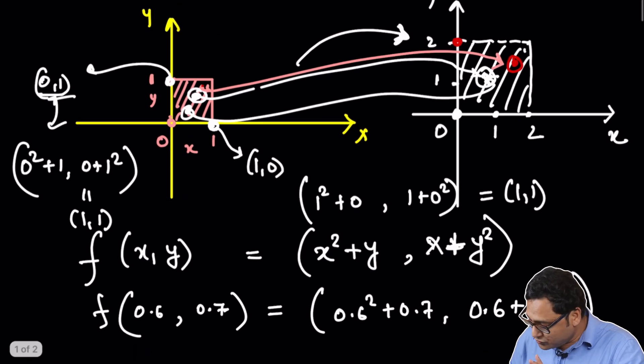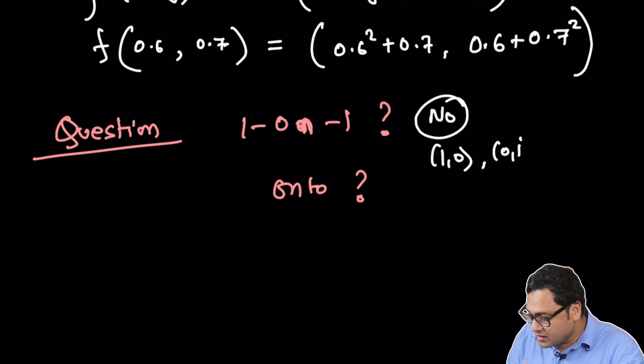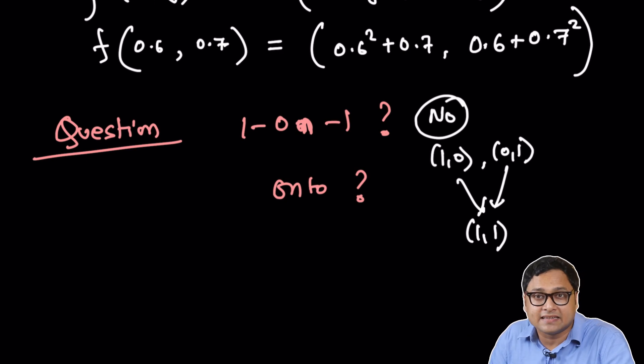Now why is the function not onto? Well, because 1 comma 0 and 0 comma 1 map to 1 comma 1. So we found a counter example. Similarly, why is it not onto?